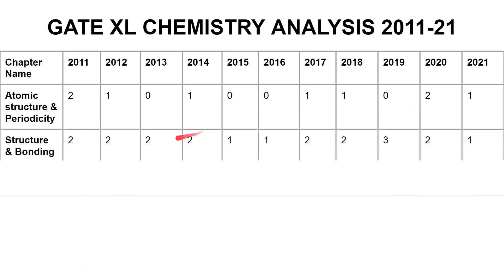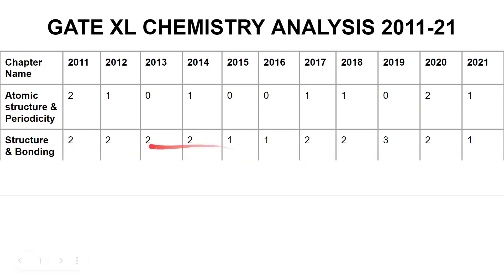The second unit is Structure and Bonding. You can see that throughout the years we have questions from it, so it's a compulsory topic with some questions and fairly high marks. Leaving 2015 and 2016, two mark worth questions are definitely asked every year. In 2019, you had three mark questions — that is, one question for two marks and one question for one mark.